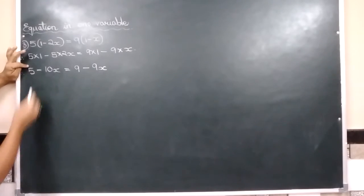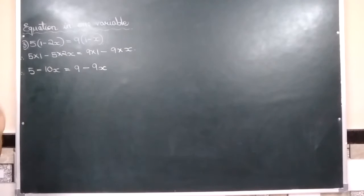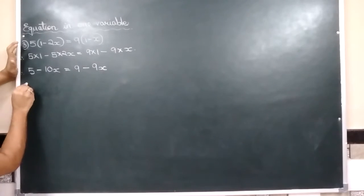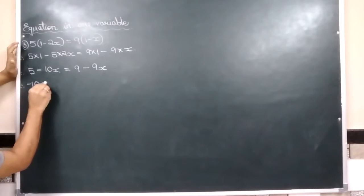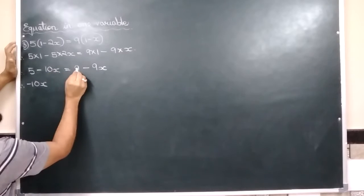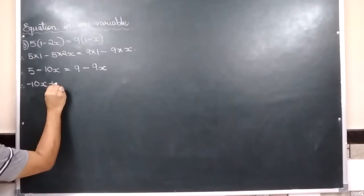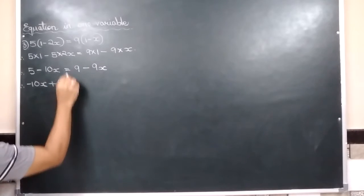you have 5 over here. This is our work. The reason, we will write negative 10x. And negative 10x will accompany negative 9x which will be left and become positive 9x.